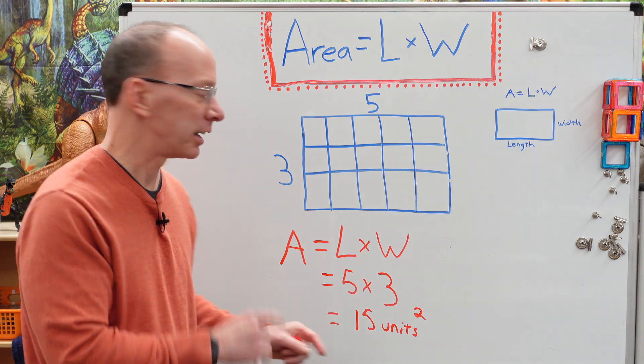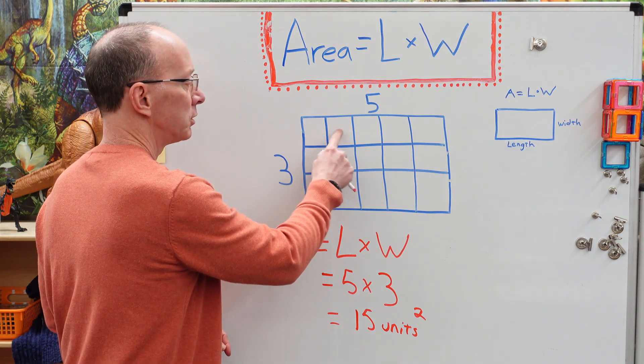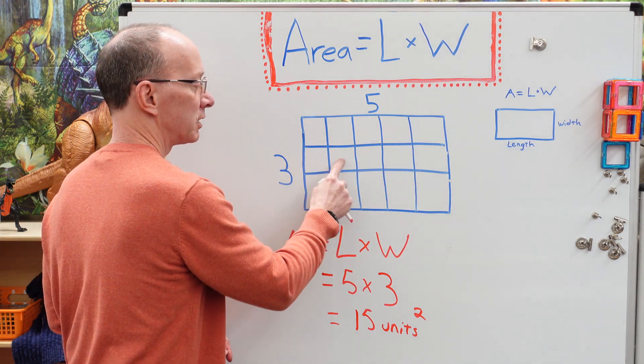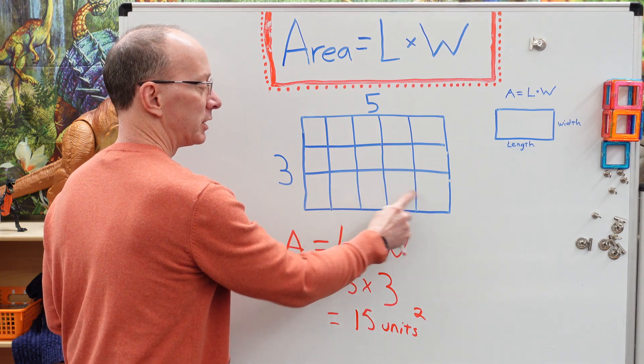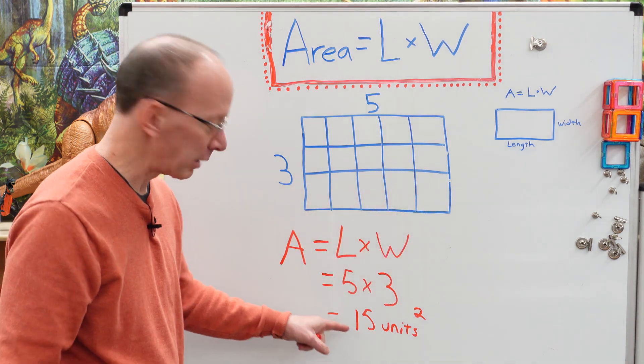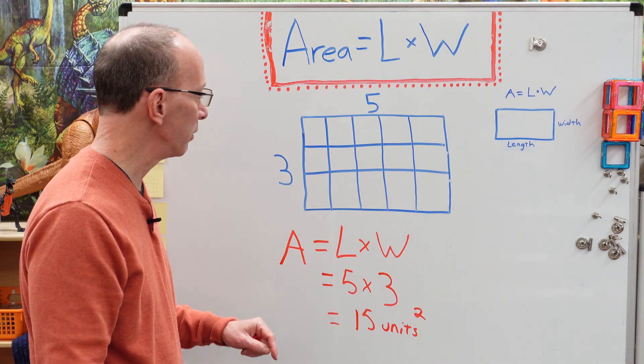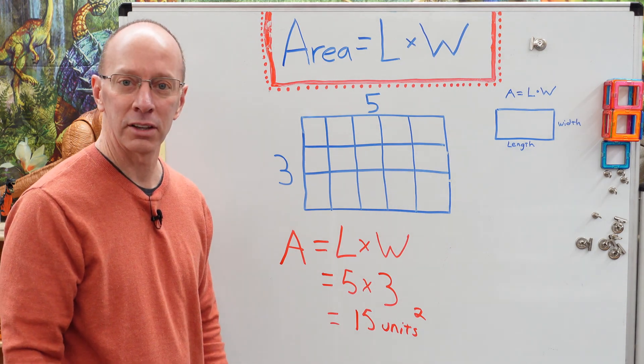Now let's check our answer here. We have 1, 2, 3, 4, 5, 6, 7, 8, 9, 10, 11, 12, 13, 14, 15. That matches up with 15 squared units. All right. Ready to do another one? Yeah, let's do it.